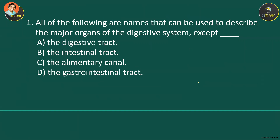Number one: All the following are names that can be used to describe the major organs of the digestive system except — looking for the except answer among A, B, C, or D. The digestive system can be called the digestive tract (correct), alimentary canal (correct), and GI tract (correct). However, intestinal tract is incorrect because 'intestinal' only refers to the intestine, not the whole digestive system. So the answer is intestinal tract.